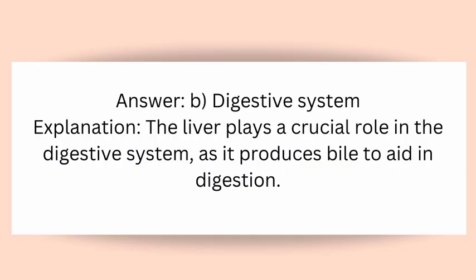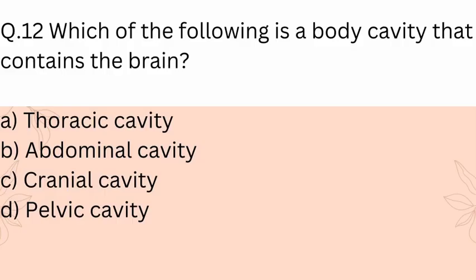Question 11: The liver is part of which body system? A) Respiratory system, B) Digestive system, C) Nervous system, D) Skeletal system. Answer: B) Digestive system. Explanation: The liver plays a crucial role in the digestive system as it produces bile to aid in digestion.